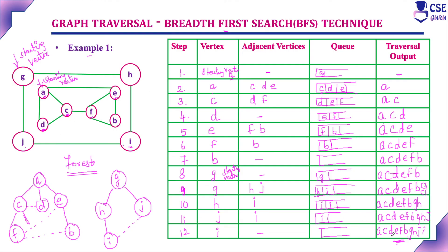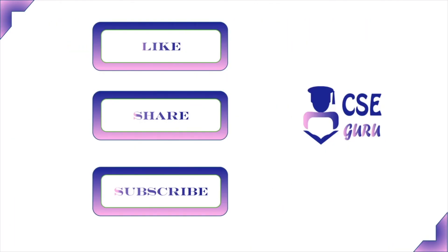The BFS traversal order for the given graph is: A is 1st, C is 2nd, D is 3rd, E is 4th, F is 5th, B is 6th, G is 7th, H is 8th, J is 9th, and I is 10th. This is the complete BFS traversal output and the procedure to implement breadth-first search. Thank you for watching.